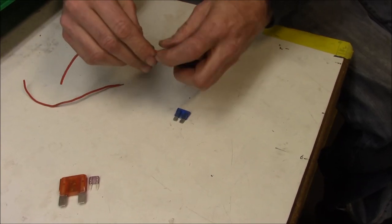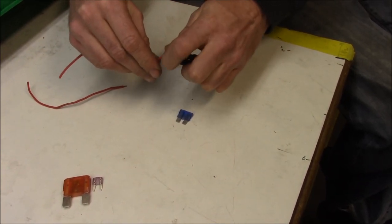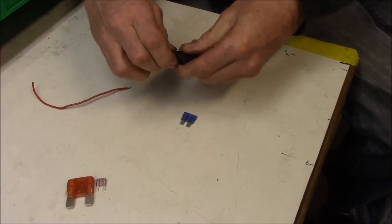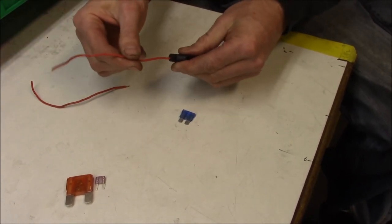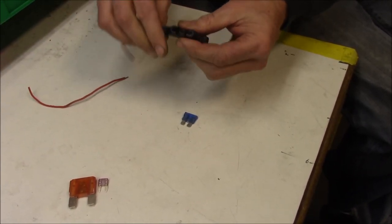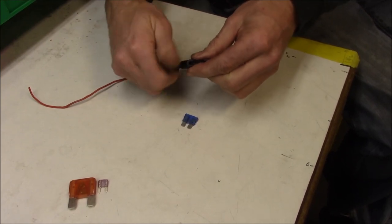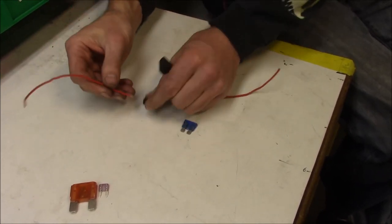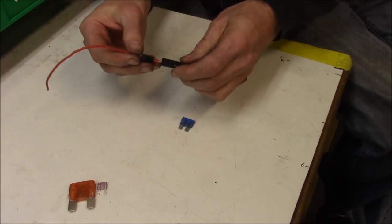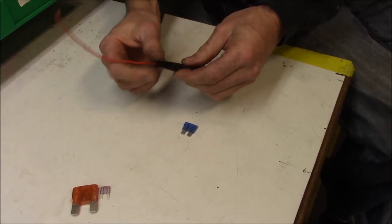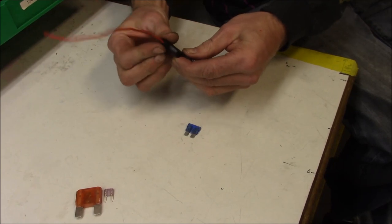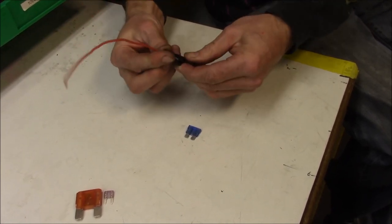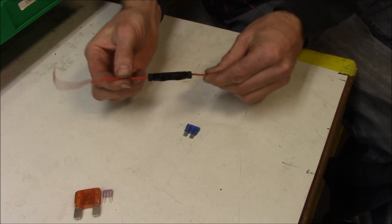And always when you're done tightening this stuff up, pull on the wire a little bit, make sure it's in there solid. So the other way is the same thing. Put that through, screw it on, and now you have a good solid fused circuit.